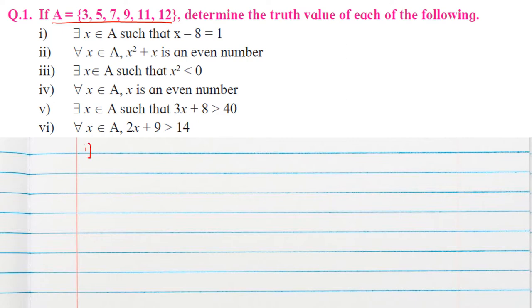There exists x belonging to A such that x minus 8 equals 1. The 'there exists' quantifier means we only need one element in set A to satisfy this equation for the statement to be true. Checking x = 9: 9 minus 8 equals 1. Since there exists x = 9 in A such that x minus 8 = 1, the given statement is true.